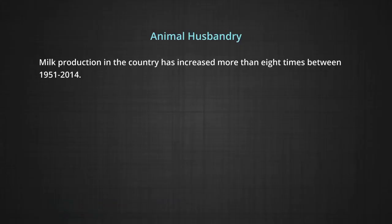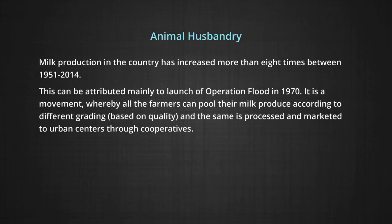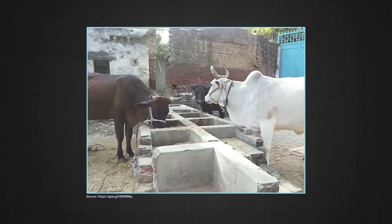Other animals like camels, horses, ponies, and mules are in the lowest rung. Performance of the dairy sector in the last three decades has been quite impressive. Milk production increased more than eight times between 1951 and 2014, attributed mainly to the launch of Operation Flood in 1970 — a movement whereby farmers pool their milk produce, which is graded by quality, then processed and marketed to urban centers through cooperatives. Gujarat's success in milk cooperatives has been emulated by many states.